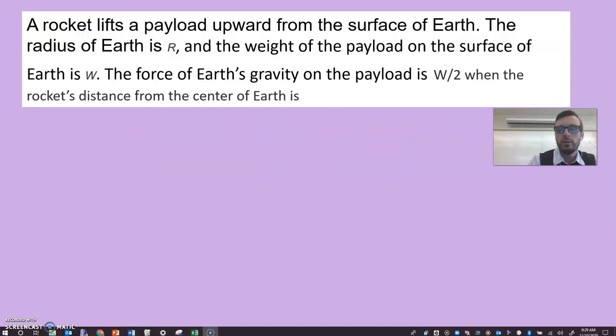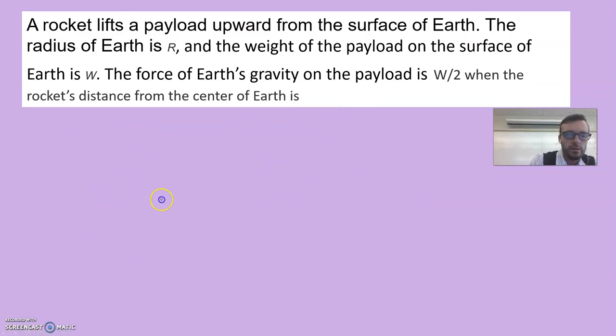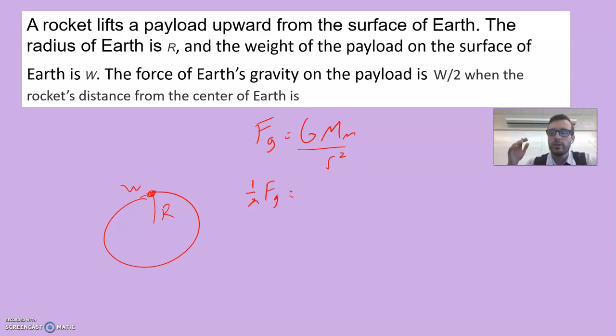A rocket lifts a payload upward from the surface of the Earth. The radius of the Earth is r, and the weight of the payload on the surface of the Earth is w. The force of the Earth's gravity on the payload is w over two when the rocket's distance from the center of the Earth is... Let's take a look. What would it take to cut our weight in half?